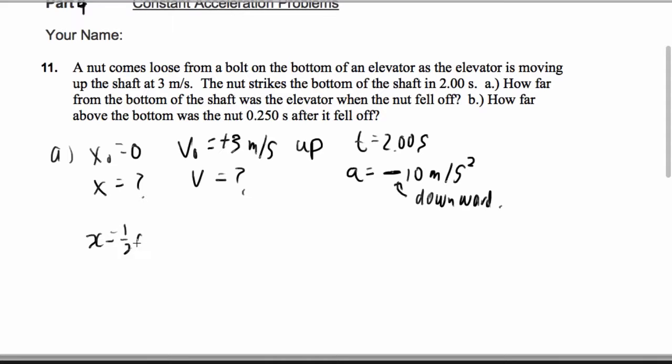Plug in x is 1 half at squared plus v naught t plus x naught. Why did I choose this equation? I'm lazy. It was the first one. I'm not even making that up. Like it's really a recommended technique is go with what you think you can solve.